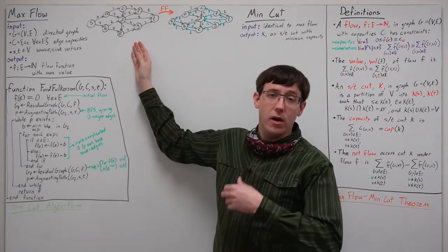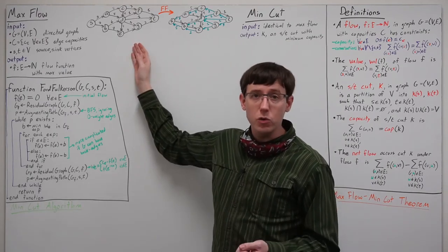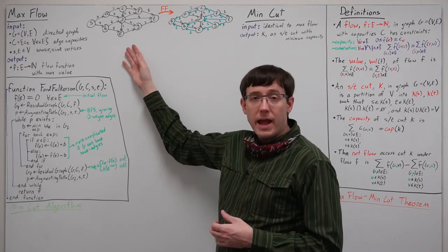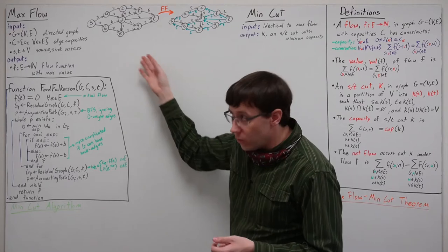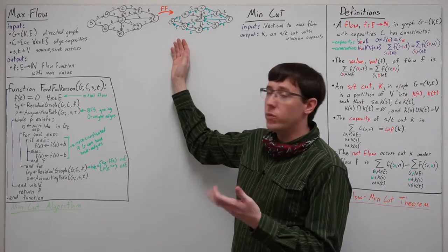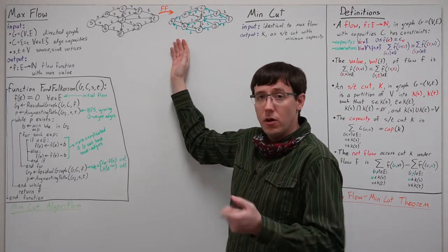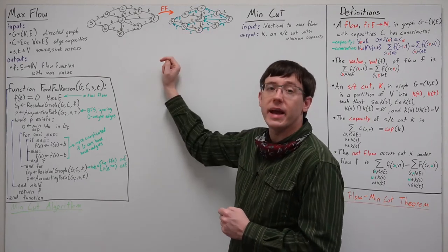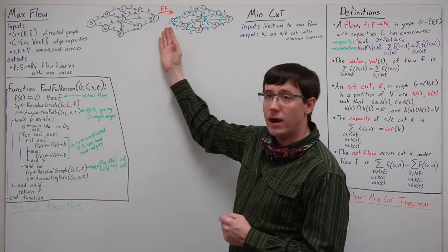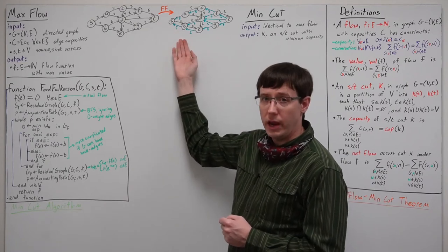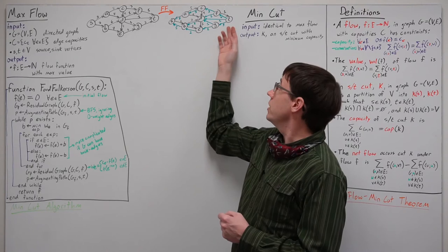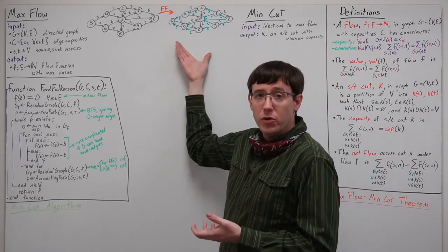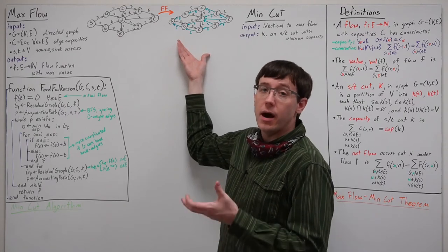In the last video we also walked through the execution of Ford-Fulkerson on a graph similar to this one, and by the end our residual graph looked like this. We saw that we could read off the flow from the residual graph by looking at the weights of the back edges. The total outflow of the source here is 8, which is equal to the total inflow of the sink, and part of our goal for this video is to prove that this must be an optimal solution.